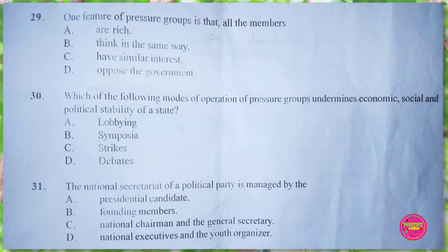Question 30. Which of the following modes of operation of pressure groups undermines economic, social, and political stability of a state? A. lobbying, B. symposia, C. strikes, D. debates. The correct answer is C. strikes.